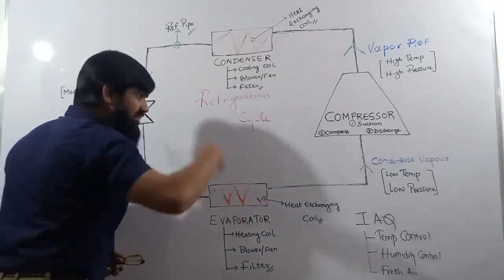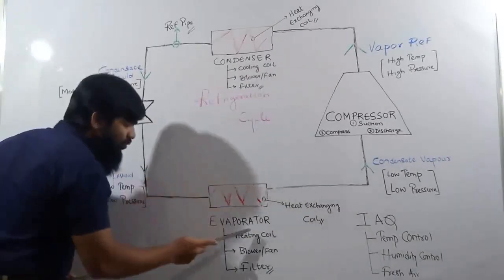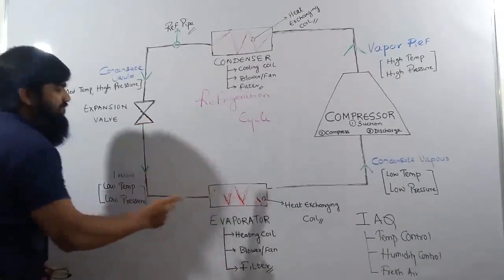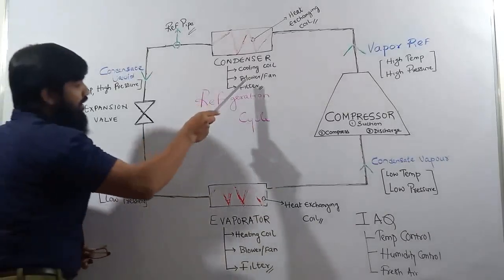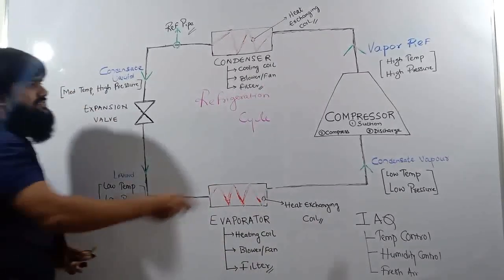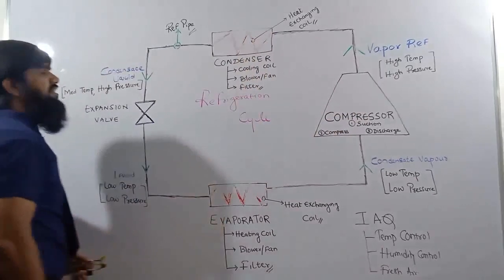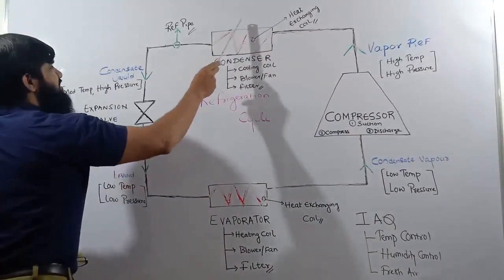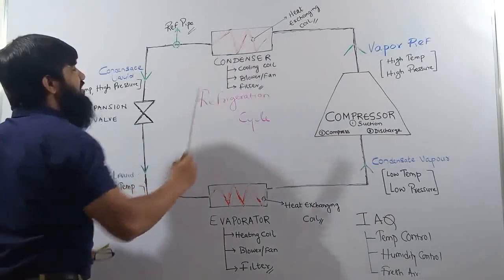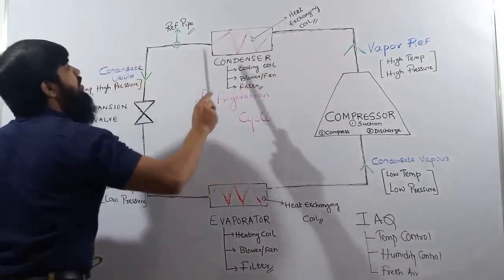Within this cycle, you will find heat exchanging coils in two components: one in the condenser and one in the evaporator. You will also find a blower, fan, and filter. From the output of the compressor, we get high temperature, high pressure vapor refrigerant entering the condenser. The condenser has a blower and a set of cooling coils. The condenser rejects the heat of the refrigerant coming from the compressor to the atmosphere.